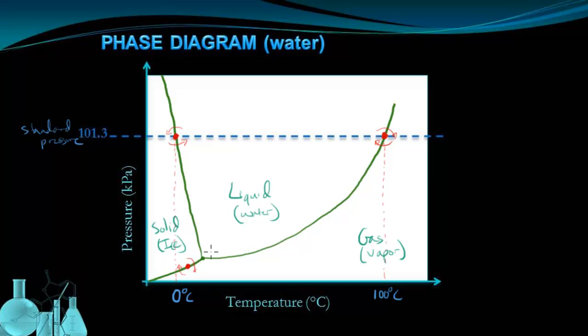There's a few more points of interest on this graph. One is this point right here, where all three of these lines intersect. And that point is called the triple point.